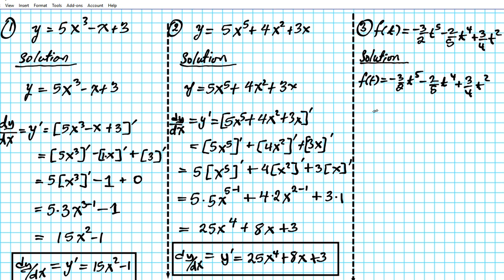We'll use the prime notation due to Lagrange: F'(t). When you have a function in this format, you put the prime after the F. F'(t) means we're differentiating with respect to t. All the differentiation rules apply — we just replace x with t. So we differentiate the whole expression: (-3/2·t⁵ - 2/5·t⁴ + 3/4·t²)'.